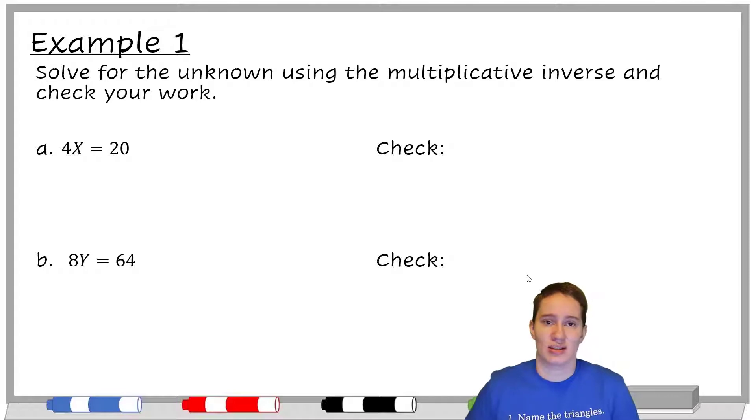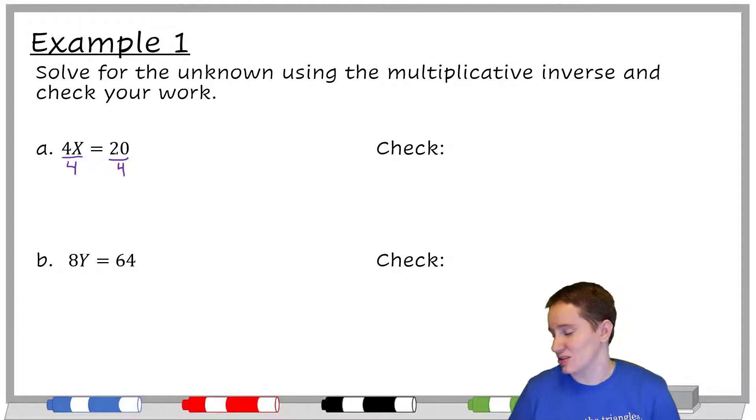So here we have 4x equals 20. And so we can think of this one of two ways. We can either think of this as here, let me divide both sides by four. Or the way to think about it like it's a multiplicative inverse, I would times both sides by 1 fourth, because that would be the multiplicative inverse of four. That's the thing that's going to get me this canceling so that I'll just end up with a single x instead of 4x.